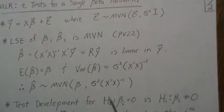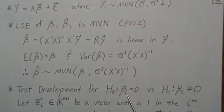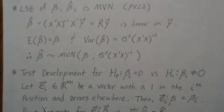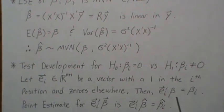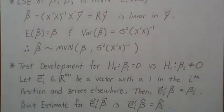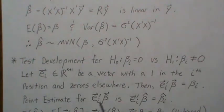Now to develop a test for one of the betas: beta_i equals zero versus not zero. Really, what this means is does the ith predictor contribute to predicting y, the dependent variable? Let's develop this test. Let e_i be a k+1 vector with a one in the ith position and zeros elsewhere. Then e_i transpose times beta isolates the ith beta component in this matrix product. As a point estimate, let's use the least squares estimate for beta_i, which is beta_i hat.